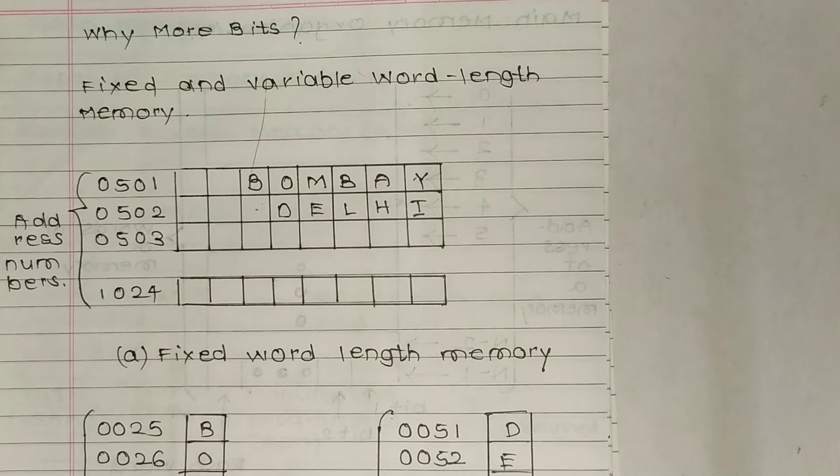Both fixed and variable word length memory systems have their own merits and demerits. Normally, large scientific computers use fixed word length approach for gaining speed of calculation. For example, let us consider a fixed word length memory computer with a word size of eight characters.